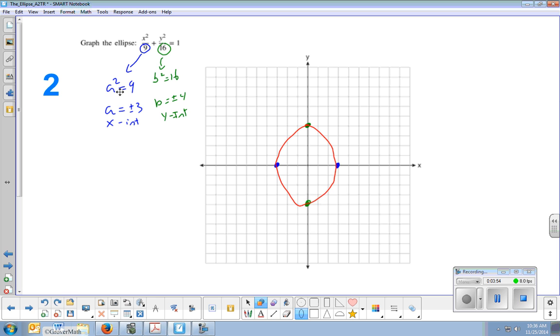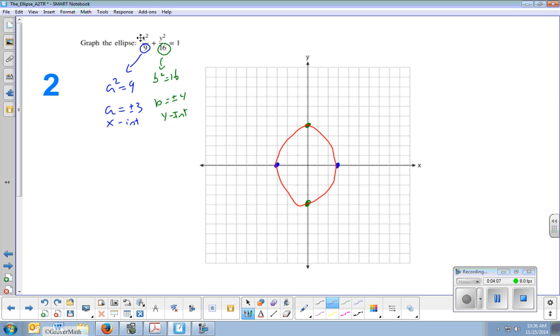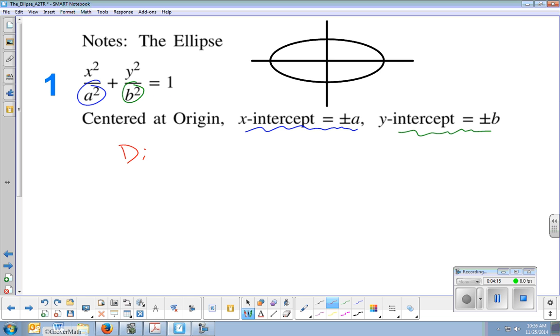The number below x squared, the square root of that is your x-intercepts, and the number below y squared, the square root of that is your y-intercepts. And one other key feature about the ellipse that definitely needs to be pointed out is we set it as different coefficients. Like in this case, the coefficient of x squared is 1 ninth, and the coefficient of y squared is 1 sixteenth. So the coefficients are different. So different coefficients. Because that's going to come, that's going to be important later on.